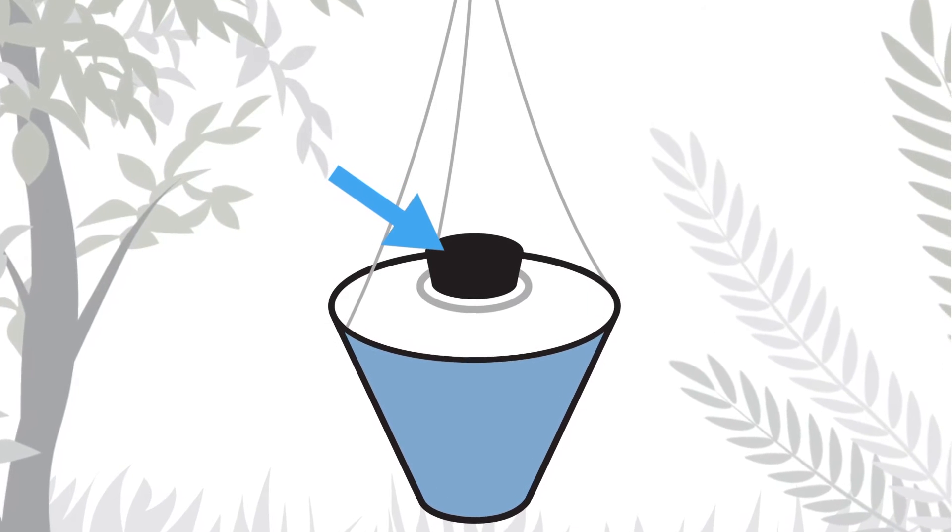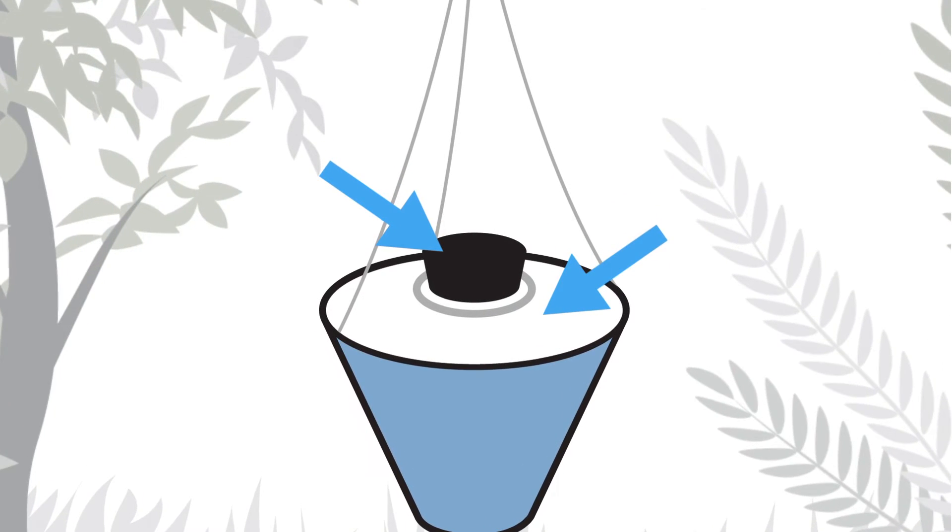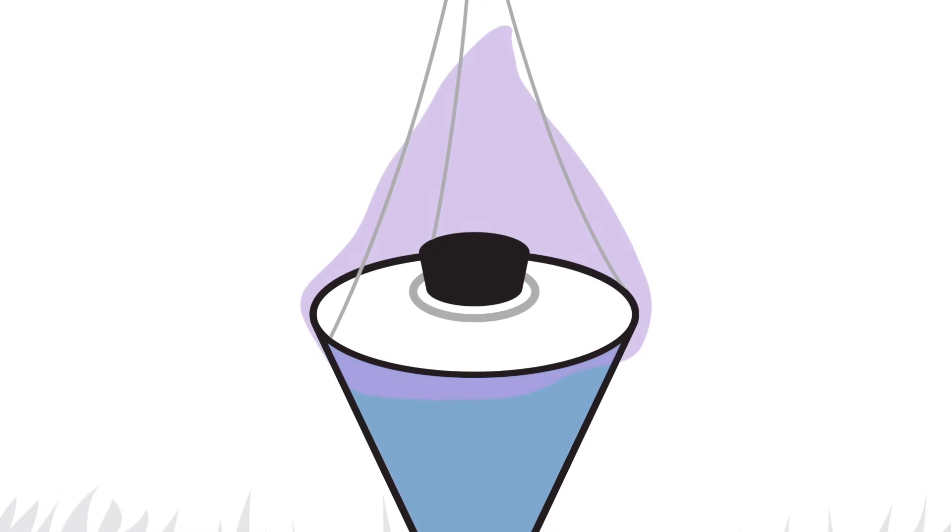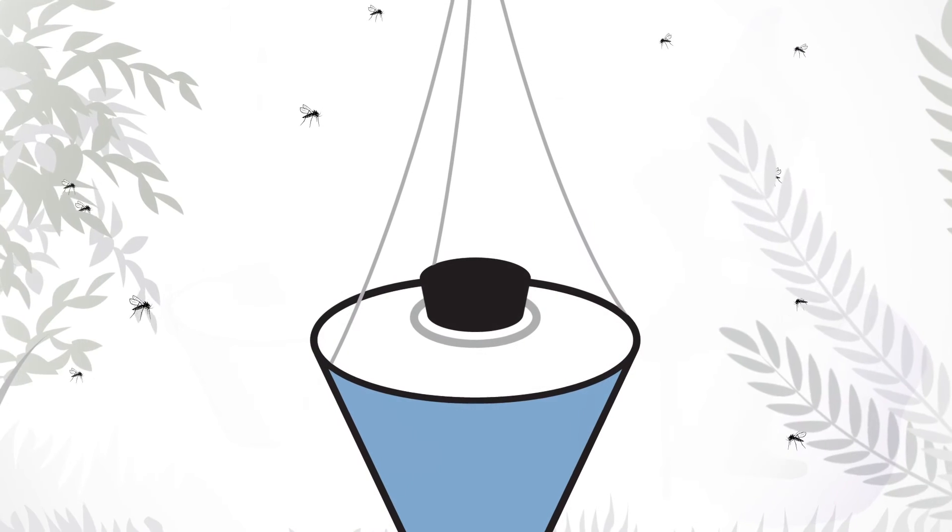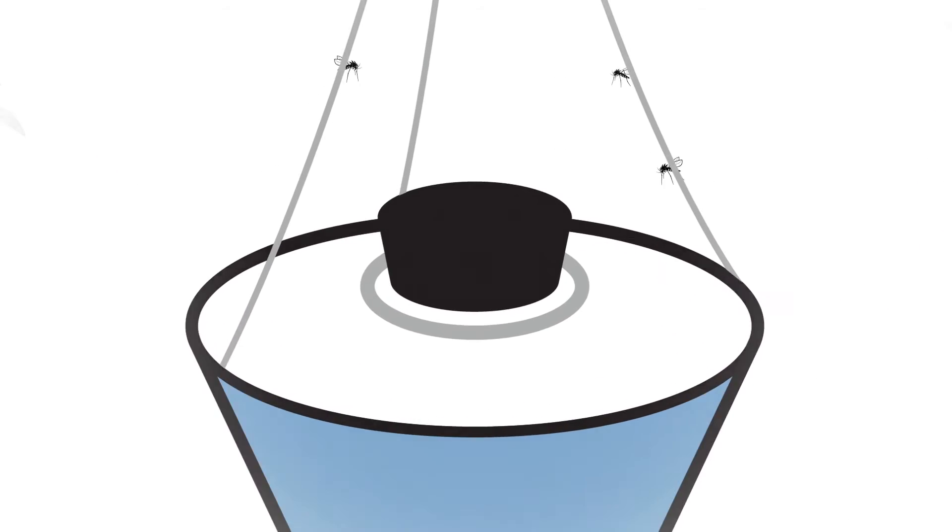The traps attract the mosquitoes through black and white contrast, which act as visual cues, and human body emissions so they look and smell like a human being. Approaching mosquitoes are sucked into them and dehydrate.